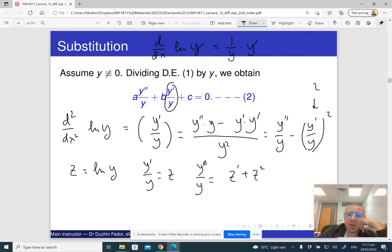Well, because moving z squared to the left-hand side, I get the equation above. So y double prime divided by y is z double prime plus z prime squared. So it means that if I do that, my differential equation gets this form.